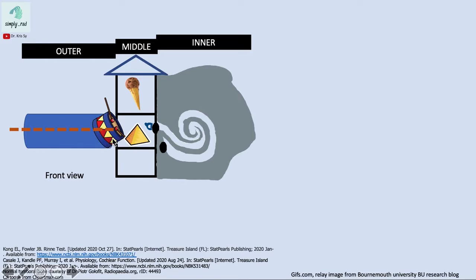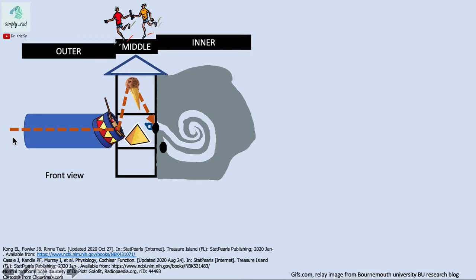The vibration from the tympanic membrane is then transmitted to the ossicles, similar to playing a relay. The vibrations go from the malleus to the incus, then incus to the stapes, and the stapes to the oval window. All of these structures have the same goal: to bring the vibration from outside all the way to the oval window — this is what we call air conduction.